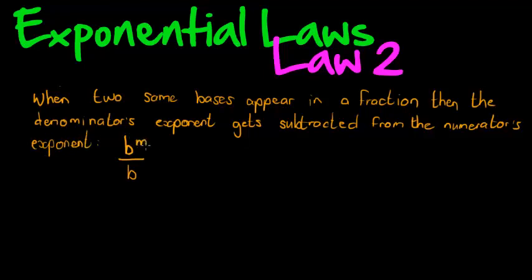So here we have M as the numerators exponent, N is the denominators exponent, and what we are saying is that if you have this, you can write it as a single base with M minus N. That is law 2. Let's look at that one's proof.